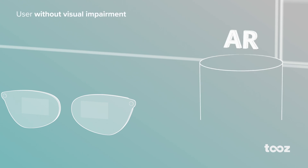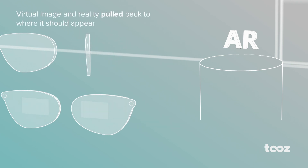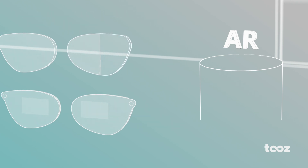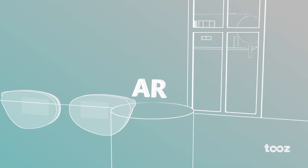Even without vision impairment, only the foreground and the AR content appear sharp, but the background appears blurry. Adding an individual pull lens ensures a corrected view simultaneously for AR content and environment.